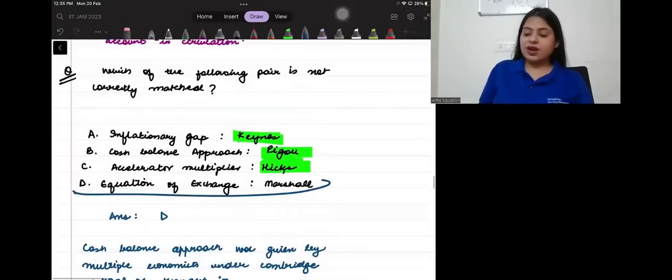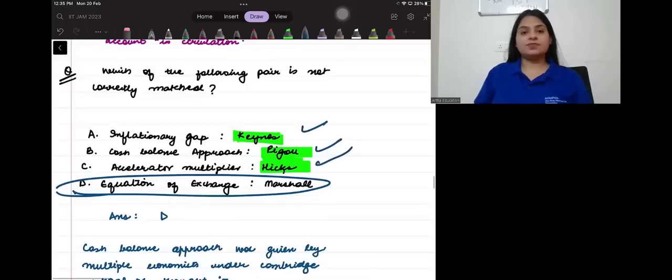So, B is incorrect. And options 1, 2, 3, and 4 are correct. Right? Okay. Thank you.